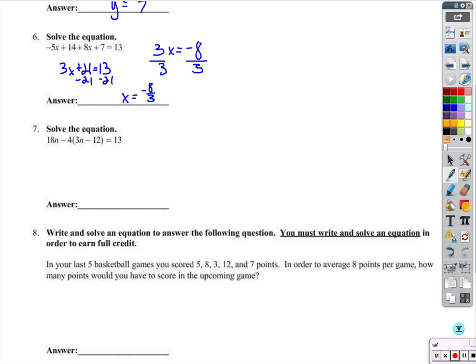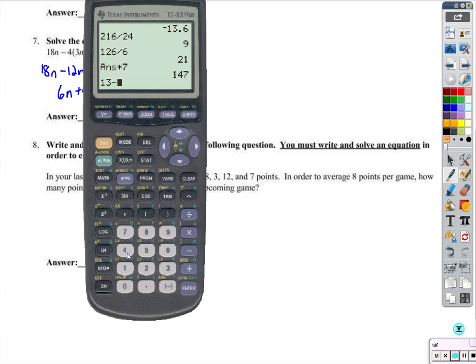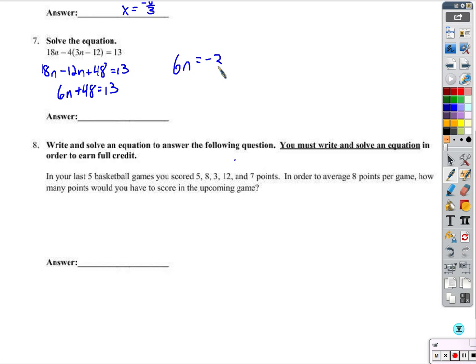Here, who can resist the urge to distribute when they see a number multiplied by parentheses? So we'll do that. We'll get negative 12n. And negative 4 times negative 12 is positive 48. Now we have like terms. We'll combine like terms. 8n minus 12n is negative 6n. Plus 48 is equal to 13. We'll subtract the 48 from both sides. 6n equals, let's just speed this up. 13 minus 48, negative 35. And we'll divide by 6 on both sides. 35 and 6 don't have any common factors. So we'll just leave it as negative 35 over 6.